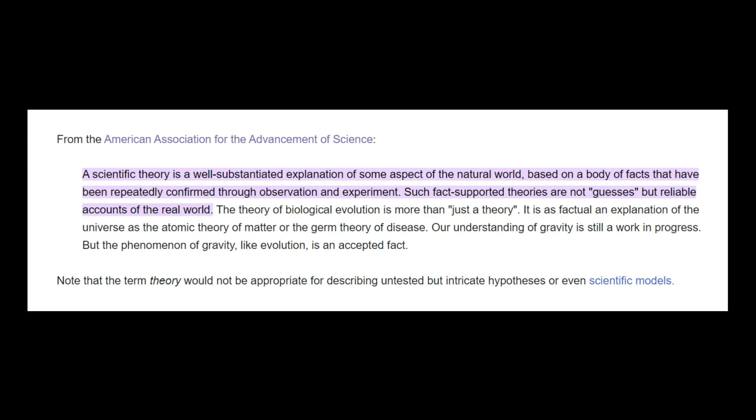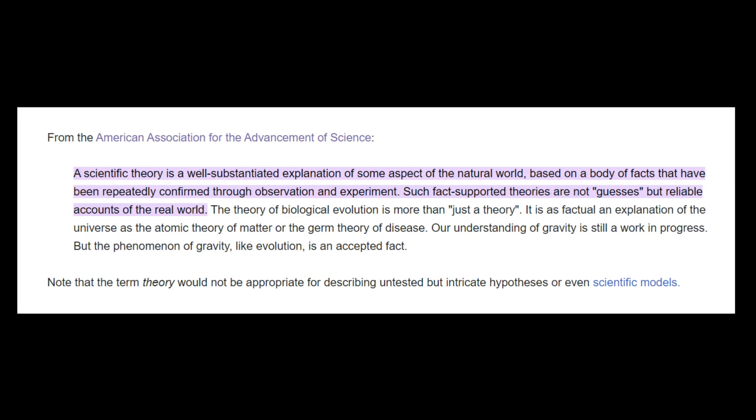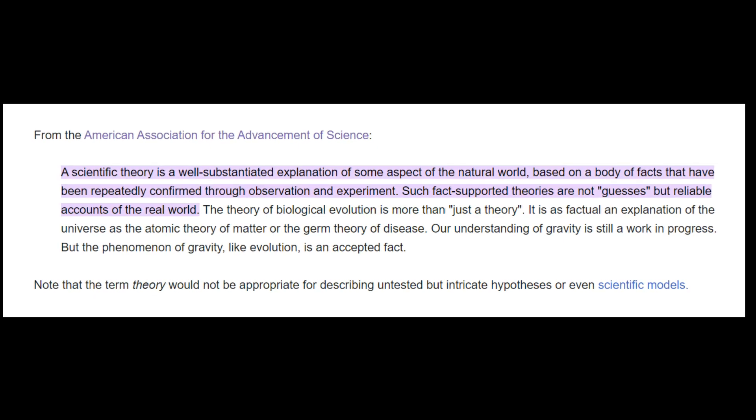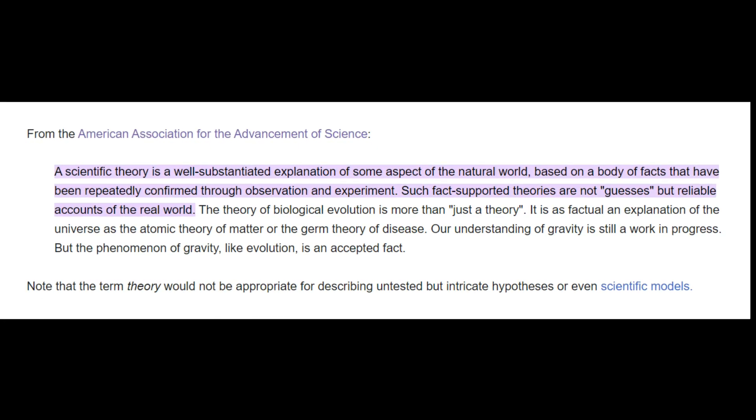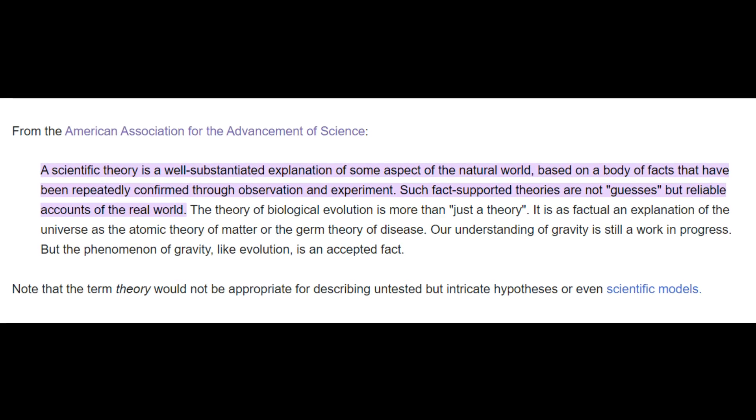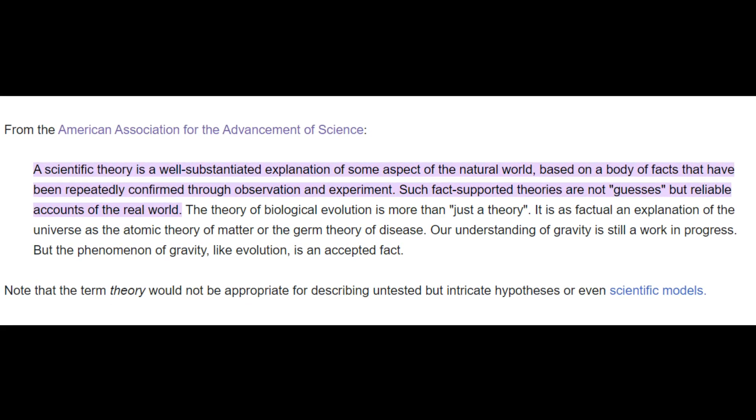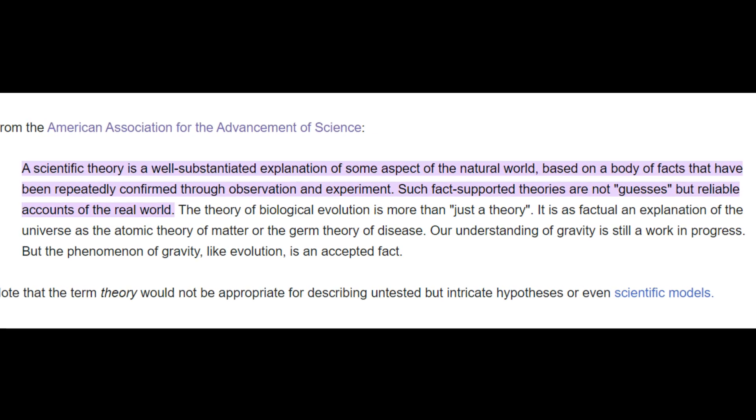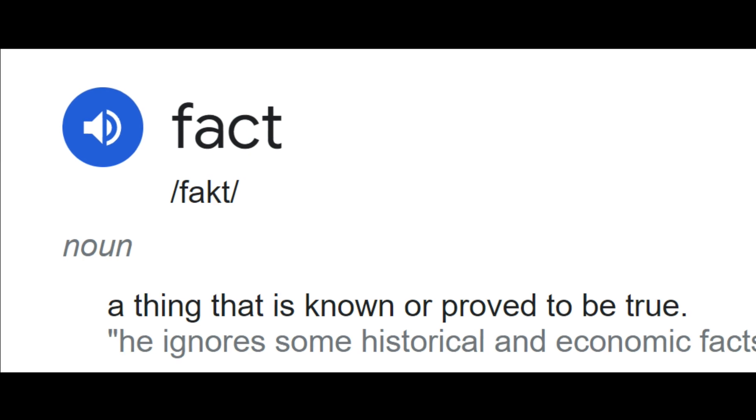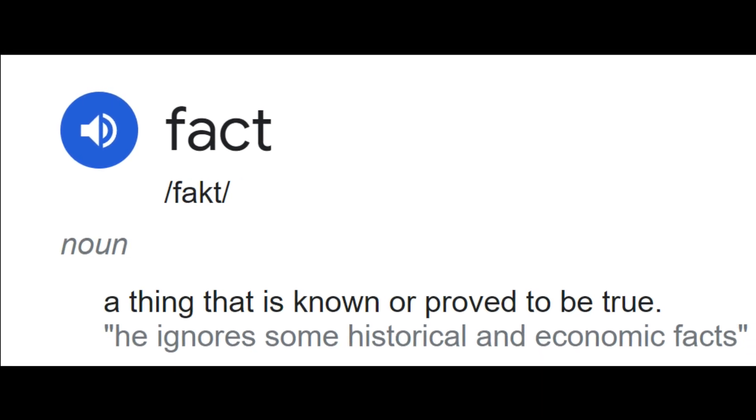In science, a theory is a well-substantiated explanation of some aspect of the natural world, based on a body of facts that have been repeatedly confirmed through observation and experiment. Such fact-supported theories are not guesses, but reliable accounts of the real world. Thus, a theory in science is equivalent to what people commonly refer to as a fact.